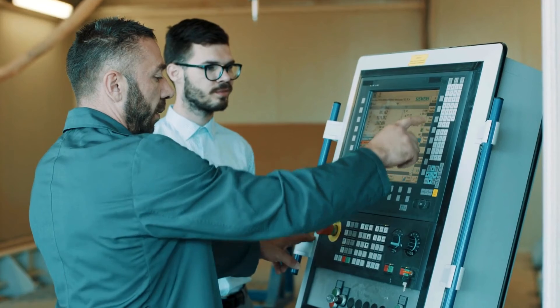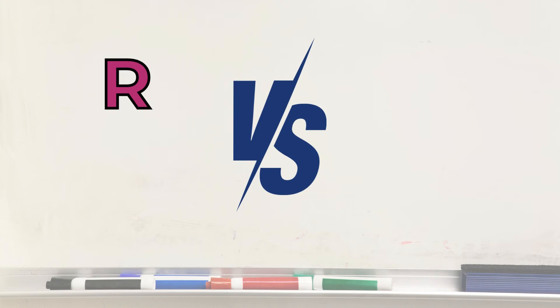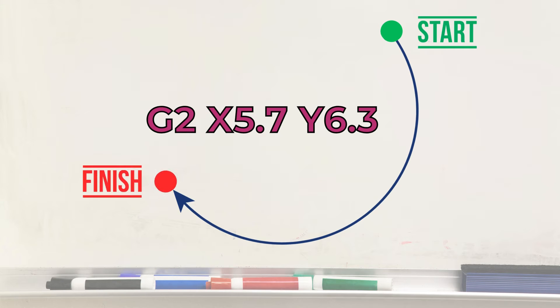G2 and G3 have two syntax formats: R-format and IJK-format. In both cases, X and Y define the movement's end position.